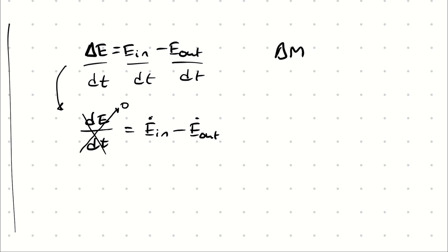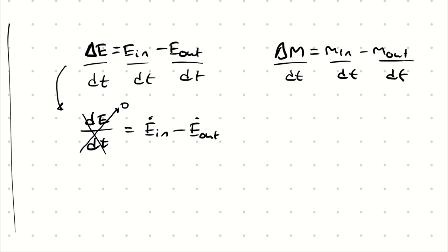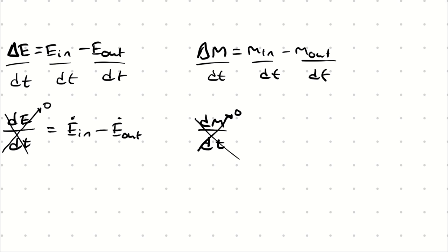Similarly, the mass balance, when divided by time, simplifies into dm/dt — which is zero if it's steady state — equal to m-dot in minus m-dot out.